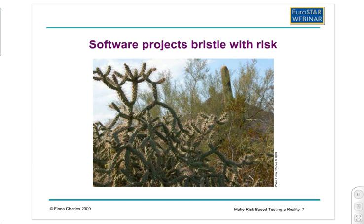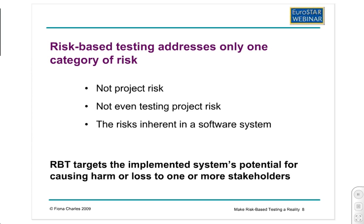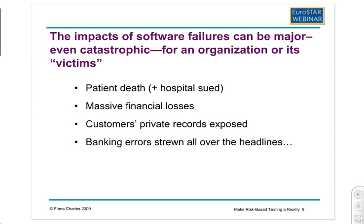Risk-based testing doesn't address every category of risk in a software project. What it does do is target the implemented system's potential for causing harm or loss to one or more stakeholders of that system. We don't worry about project risk or the testing project risk at this point — those are accounted for in other processes. When we're doing risk-based testing, we're looking at how the implemented system could hurt someone, and we know that the impacts of software failures can be potentially catastrophic.